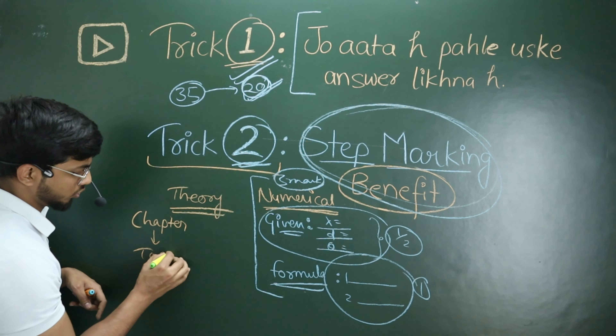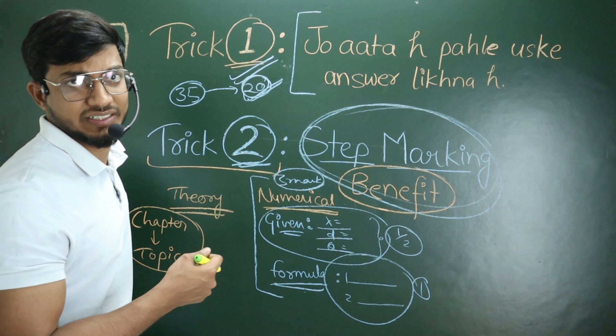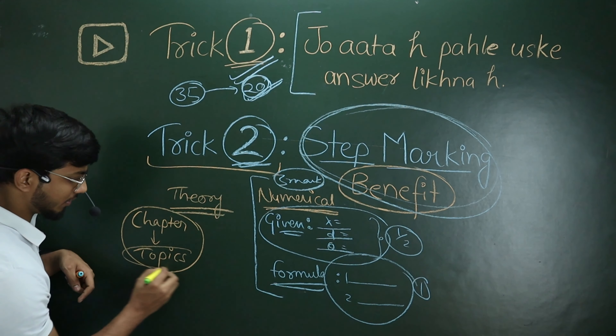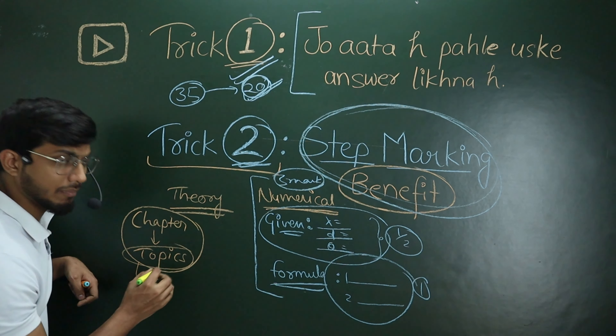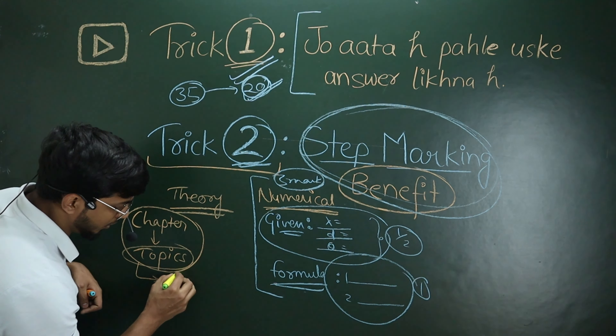After that, for a theoretical question, how do you attempt it? You need to identify which chapter the question is from. After identifying the chapter, remember what topics are in that chapter. For example, in physics, in the chapter Ray Optics, the topics include prism, telescope, and microscope. When you identify the topic, write down everything you know about that topic.